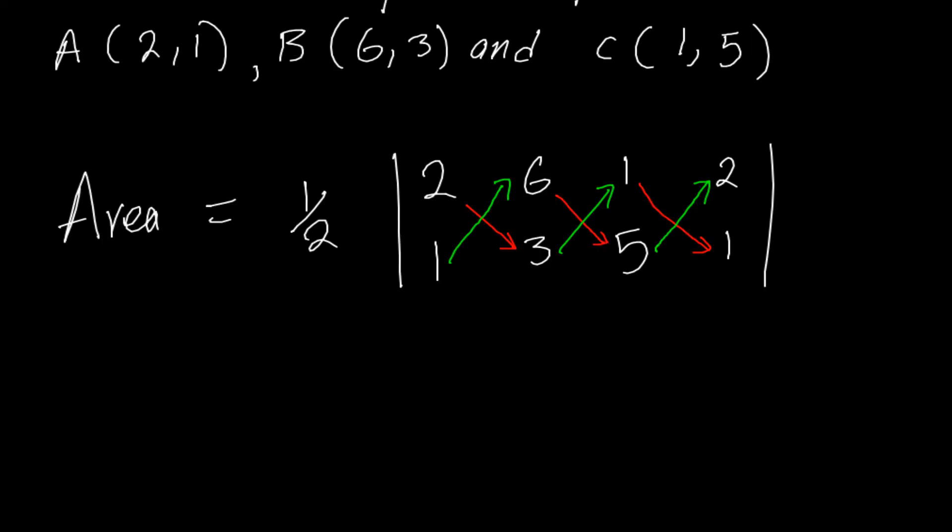So let's start multiplying. We are starting with the red arrows. That will be a half into 2 times 3, and then plus 6 times 5, and then plus 1 times 1.